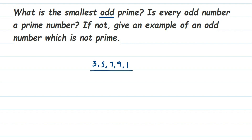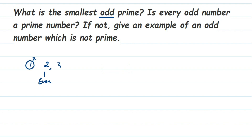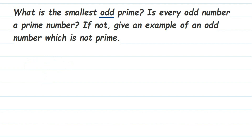Prime numbers start from two. One is neither prime nor composite, so prime numbers start from two, but two is an even number. The next prime number is three, then five. Three is an odd number and a prime number. So the smallest odd prime number is three, and the smallest even prime number is two. Therefore, three is the smallest odd prime number.